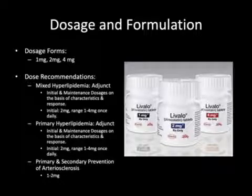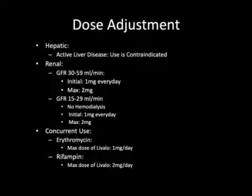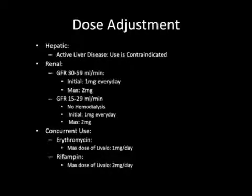Dose recommendations for primary and secondary prevention of arteriosclerosis include a range from 1 mg to 2 mg a day. Dose adjustment should be made with patients on certain medications and patients who have liver or renal dysfunction. Livalo is contraindicated in patients with active liver disease. Patients who have a GFR ranging from 30 to 59 mls per minute can take 1 mg a day as an initial dose with a max dose of 2 mg.